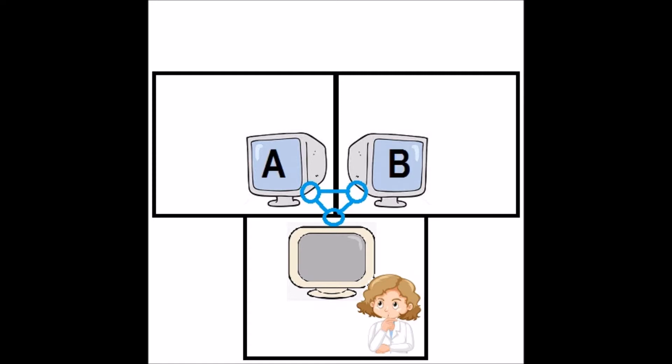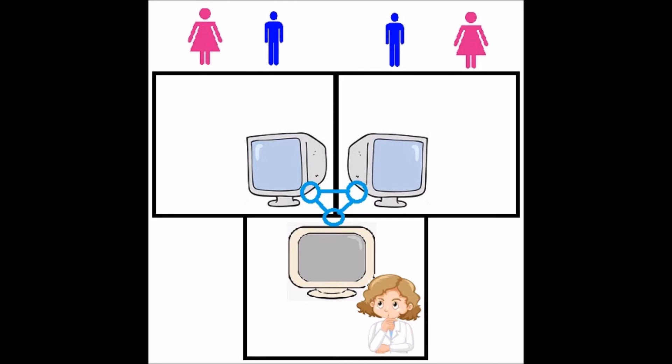The other two rooms are occupied by participants designated A and B. The identity of the participant could be either male or female. The interrogator doesn't know the gender of either participant, such that A could be male or female and B could be male or female.